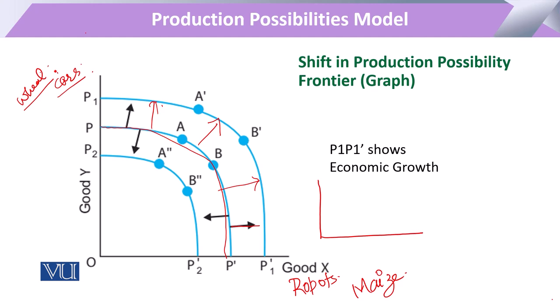When we consider these two goods, we look at production in each sector and include two factors of production: labor and capital. Here is the available labor and here is the available capital used in producing these goods.